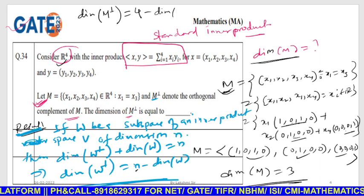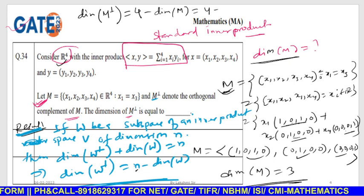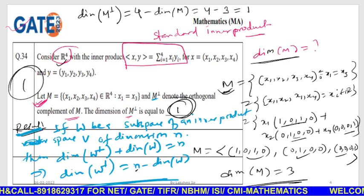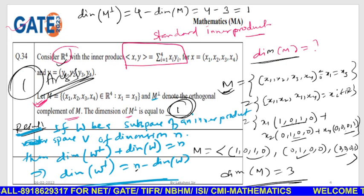So this implies 4 minus 3 equals 1. Right, option D, the answer is 1.